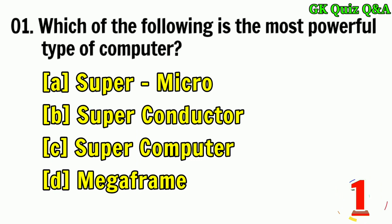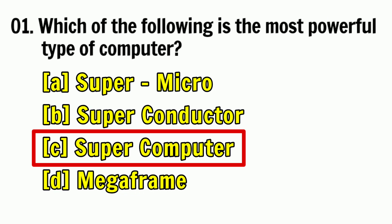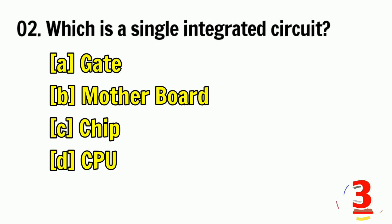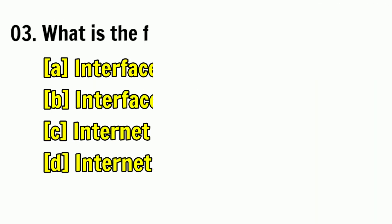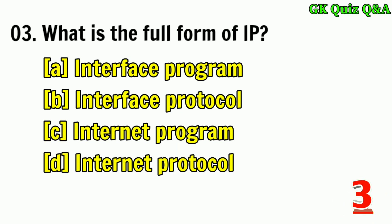Which of the following is the most powerful type of computer? Answer: C — Supercomputer. Which is a single integrated circuit? Answer: A — Gate. What is the full form of IP? Answer: Internet Protocol.